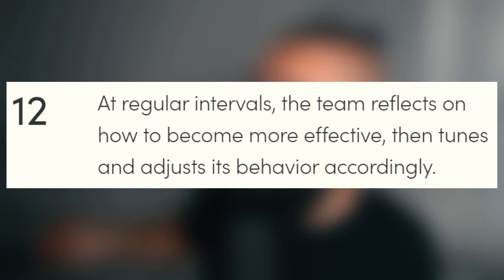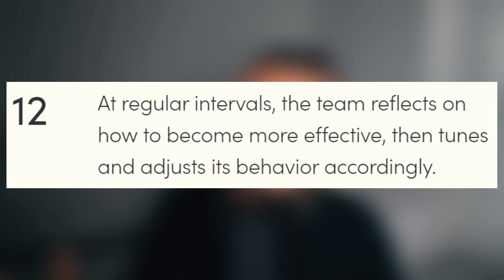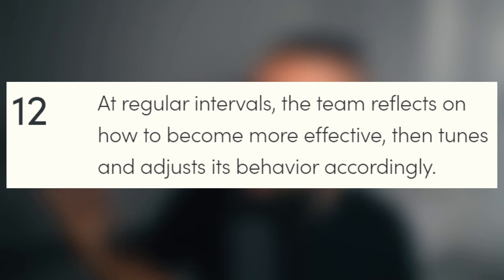It all starts with agile principle number 12: at regular intervals, the team reflects on how to become more effective, then tunes and adjusts its behavior accordingly. Retrospectives in the Scrum framework should happen every single sprint — a time to reflect on what went well and how we can improve in terms of ways of working, processes, communication, and how we run our team.